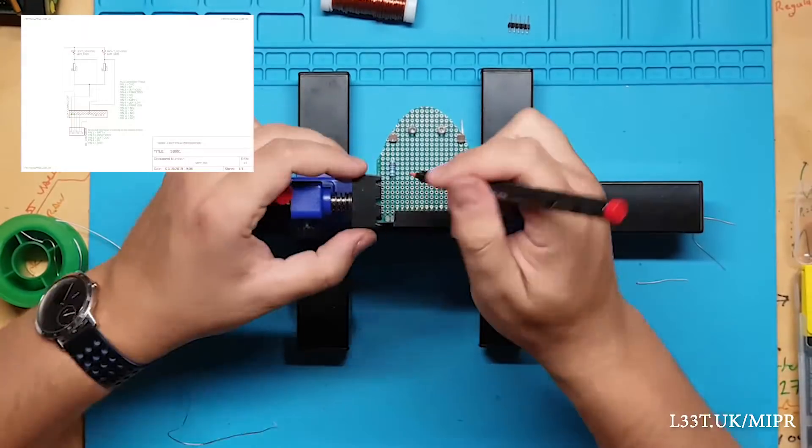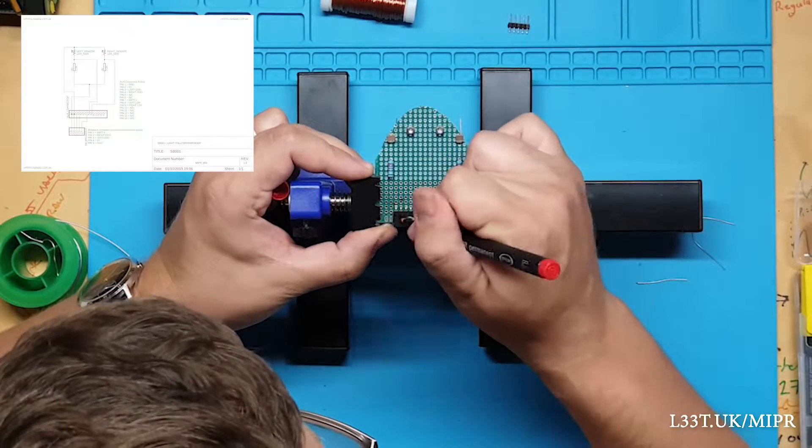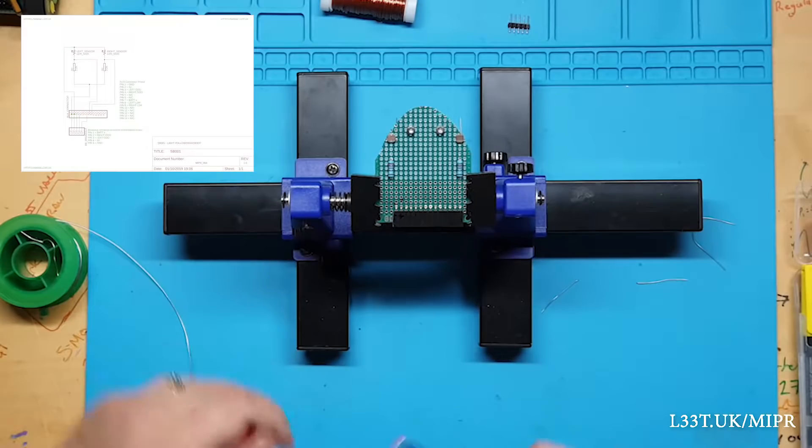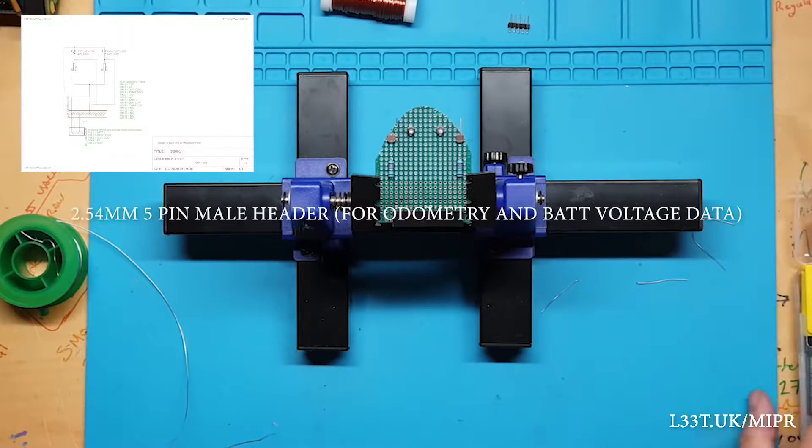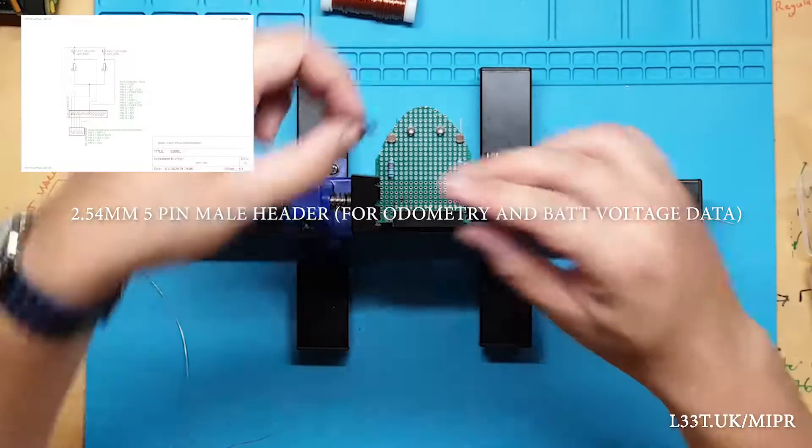For light seeking mode we would connect the left LDR to the right enable pin and the right LDR to the left enable pin. To turn it into a light avoider we would swap the enable pins around.